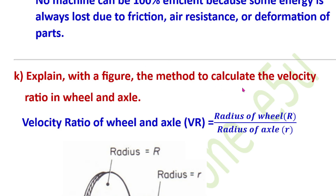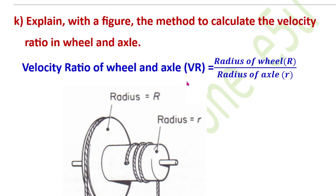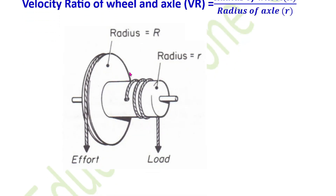The method to calculate the velocity ratio of wheel and axle: velocity ratio equals radius of wheel upon radius of axle. The wheel radius is represented as capital R, and the axle radius is represented as small r. So, velocity ratio = R/r.